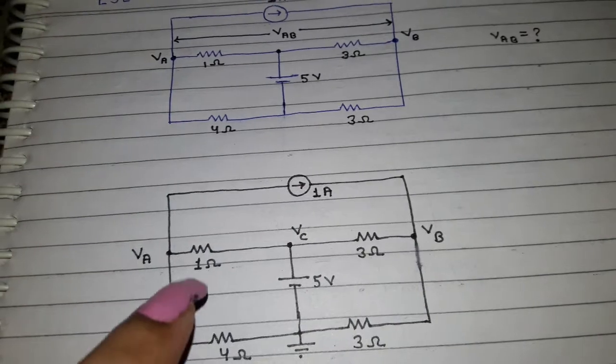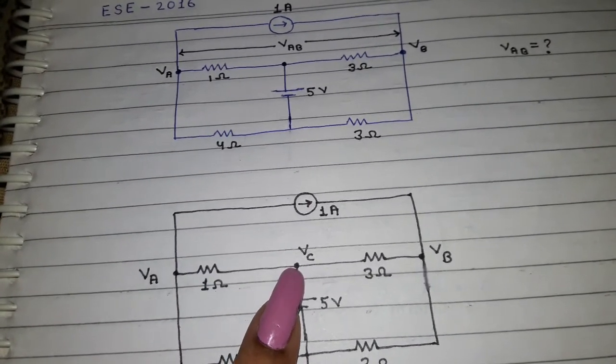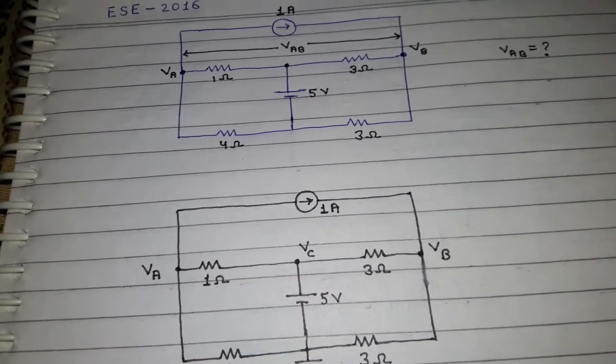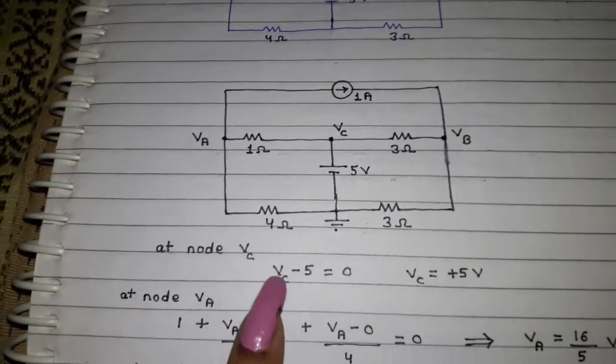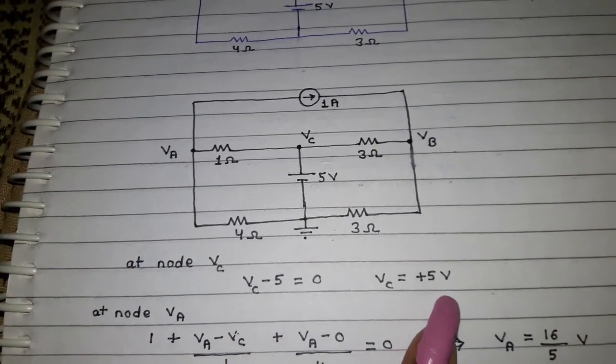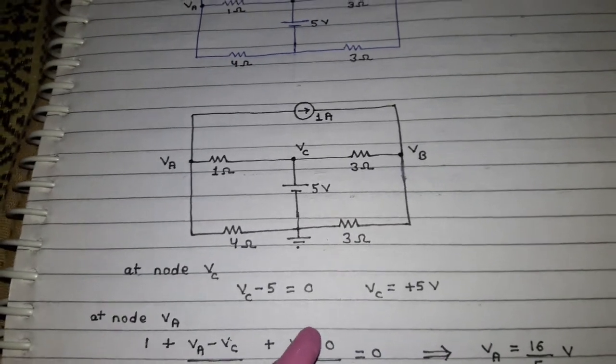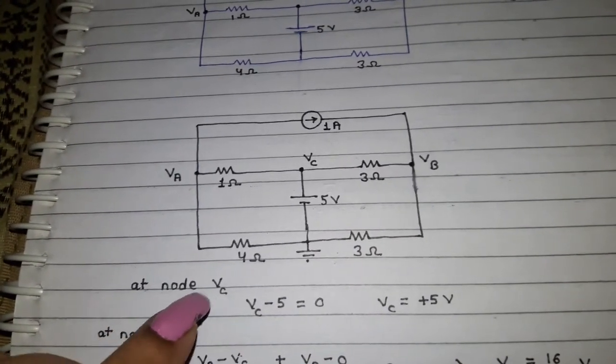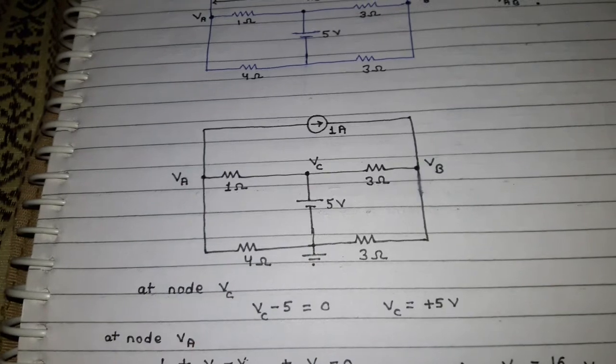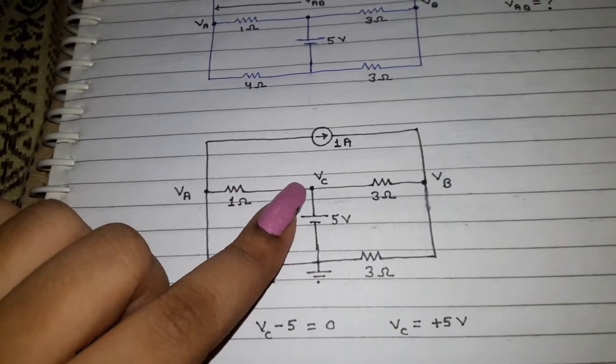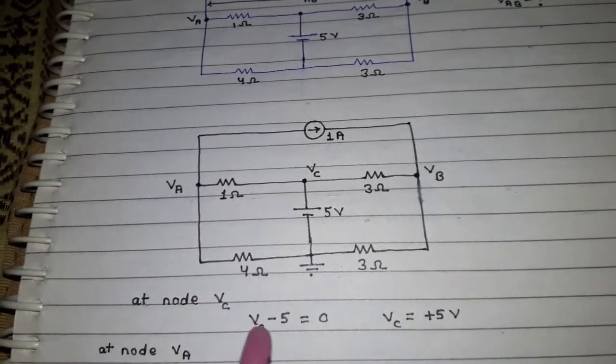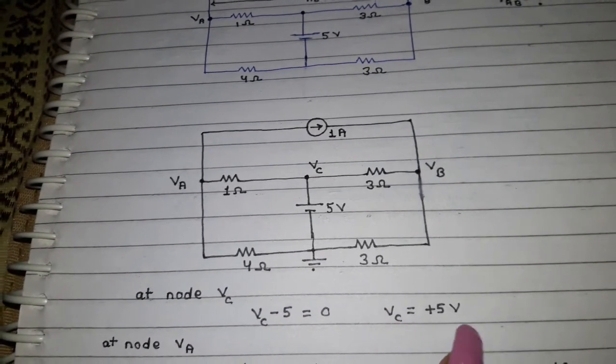Let's get started. First of all, we are taking this point over here as our reference node with voltage as VC. On applying nodal analysis you get this equation. If you have any problem regarding nodal analysis, I will link the video in the description box. So this is your reference node and you apply nodal analysis, you get the equation as well as the value of the reference node voltage.